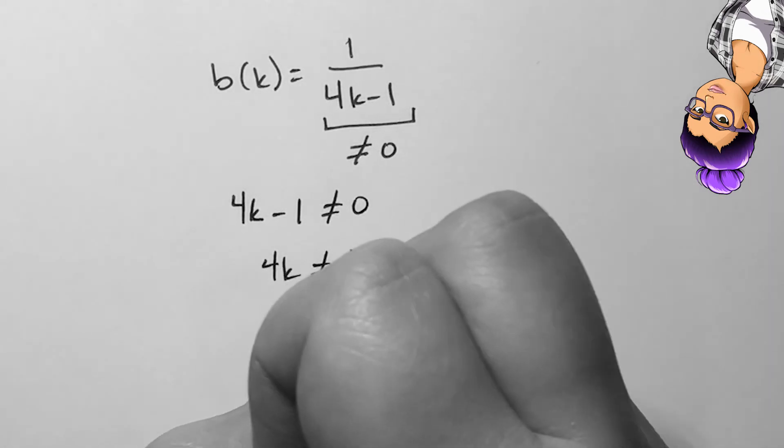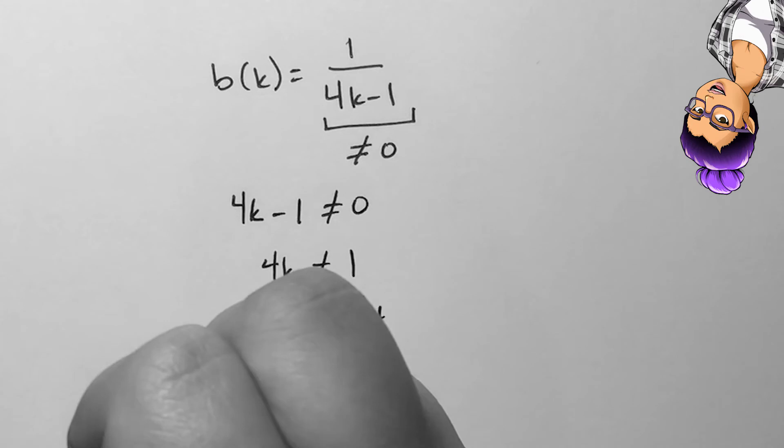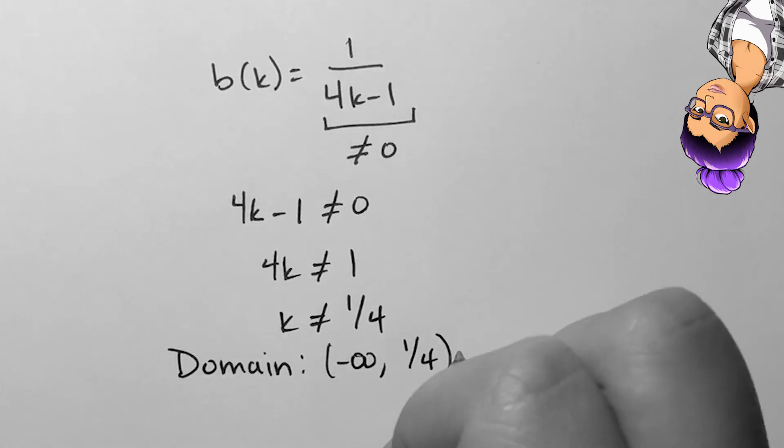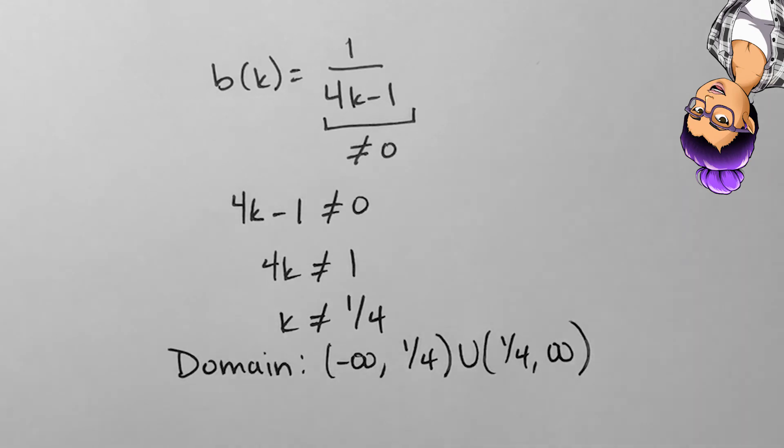So anything in the denominator is not allowed to be 0. If 4k minus 1 is not 0, then 4k is not 1, and k is not 1 over 4.